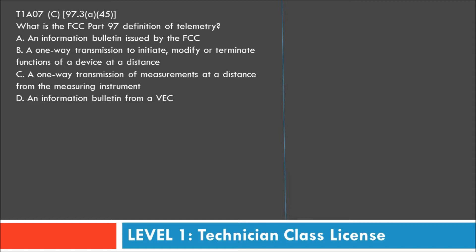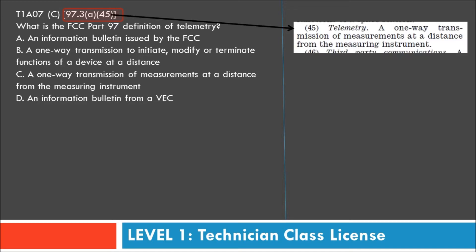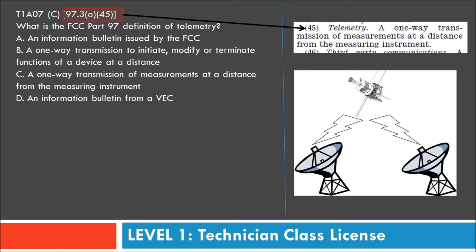Question seven: what is the FCC Part 97 definition of telemetry? Choices are: an informational bulletin issued by the FCC; a one-way transmission to initiate, modify, or terminate functions of a device at a distance; a one-way transmission of measurement at a distance from the measuring instrument; or an informational bulletin from a VEC. Per 97.3 paragraph 45, telemetry is a one-way transmission of measurement at a distance from the measuring instrument — for example, a satellite sending measurements to ground stations. The answer is C.